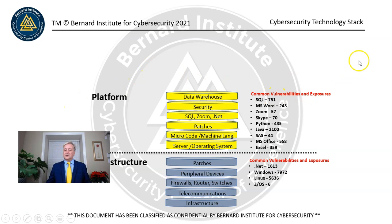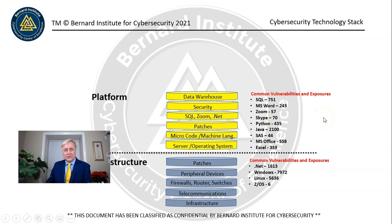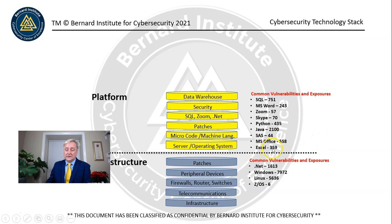Platform has a number of vulnerabilities. Here are some examples: SQL has 751 known vulnerabilities; MS Word has 243; Zoom has 57; Skype has 70; Python has 435. Python is a fourth-generation language — pretty high-level coding, not like C# or Java. However, Java has a lot of vulnerabilities as well — 2,100. SAS has 44. Microsoft Office has 558 vulnerabilities, and Excel has 359 vulnerabilities. So there are a lot of vulnerabilities within the stack, both within the infrastructure and the platform.